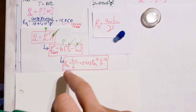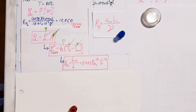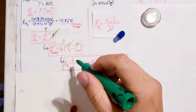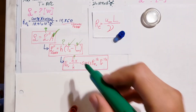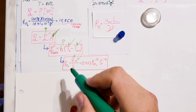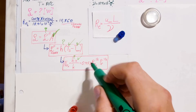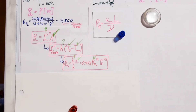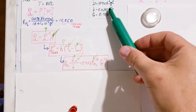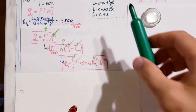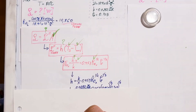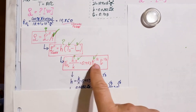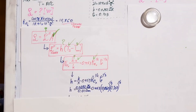Using the Nusselt number correlation with H, X, K, Reynolds number, and Prandtl number — we look up K and the Prandtl number from tables at the film temperature. With everything known, we solve for H using just the two sides of the equation and find our H value of 118 watts per meter squared Kelvin.